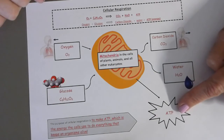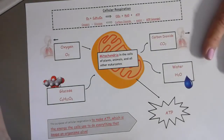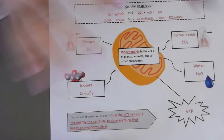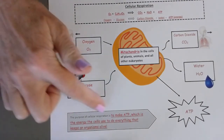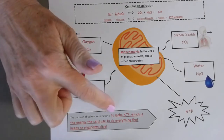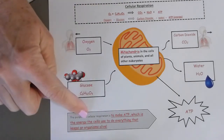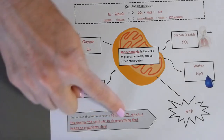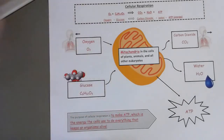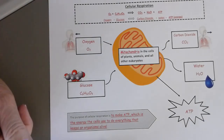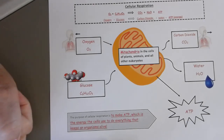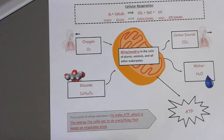In your note taker, make sure you have filled in all of the boxes. The purpose of cellular respiration is to make ATP, which is the energy the cells use to do everything that keeps an organism alive. After you've completed these two note takers, cut them out, trim them, and glue them into the notes section of your notebook.